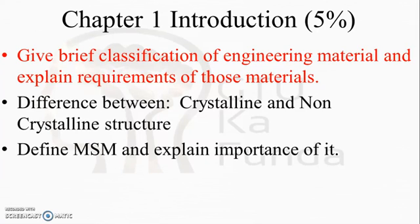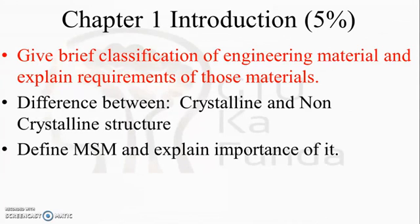The questions shown on your screen — the ones marked in red — are the important questions for the subject. For example, 'Give brief classification of engineering material and explain the requirements of those materials' is an important question because the GTU asks these types of questions again and again. We have not mentioned marks for any particular question because the topics we give you should be studied thoroughly, as they can ask one-mark, three-mark, four-mark, or seven-mark theory questions. Do the whole theory perfectly, as it will lead to more marks.